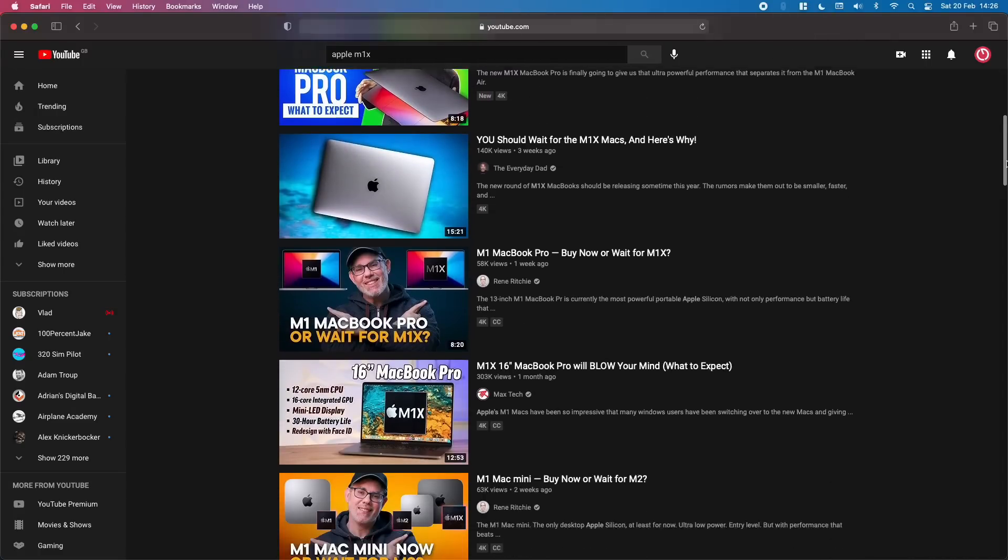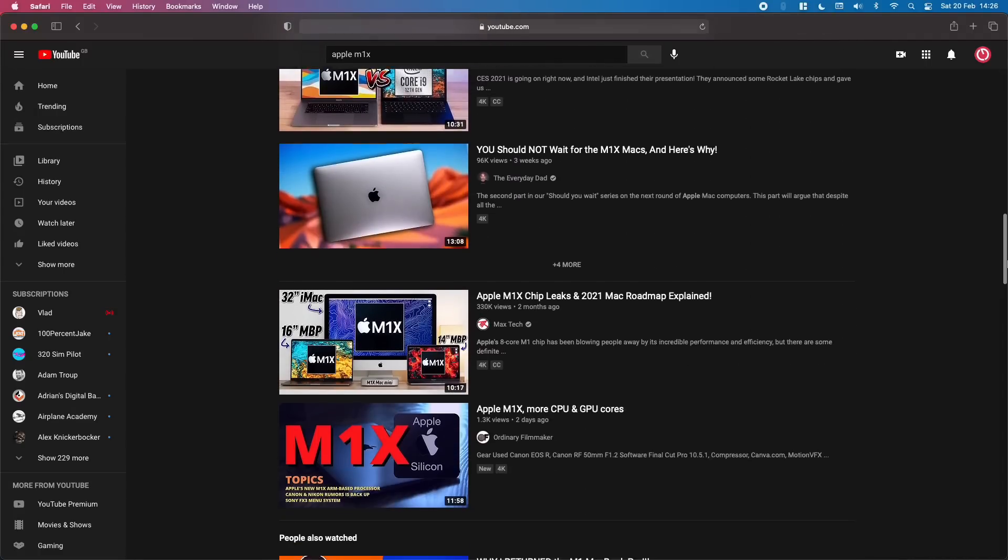Thing is, Apple can't just slap the same M1 chip into all of these different machines. They need a hierarchy, they need an upgrade path, a reason for you to spend more money. So I think it's pretty reasonable to assume that we're going to see an upgraded M chip. And again, there are plenty of rumors about this. Spend some time browsing YouTube thumbnails and you could convince yourself that there already is an M1X chip out there. So the question is, can we make some reasonable and logical predictions on what the next chip might offer without getting too far into the sensationalist click-baity world of tech crystal ball gazing? Let's give it a try.